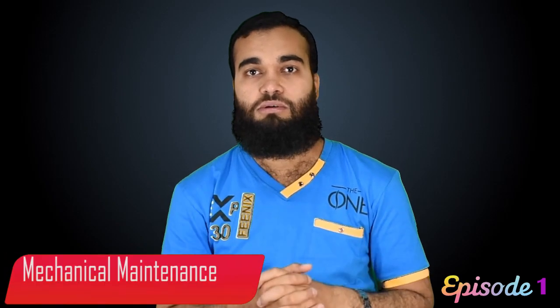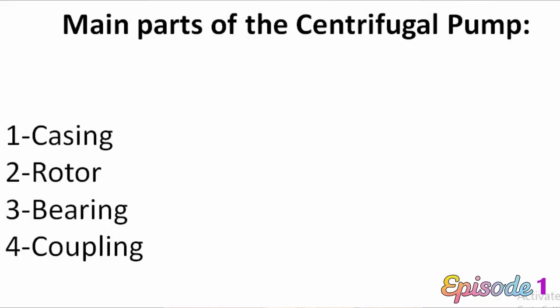Now I will tell you about the centrifugal pump — what are the main parts. As you can see on the screen, the main parts of the centrifugal pump are: casing, rotor, bearing, and coupling.